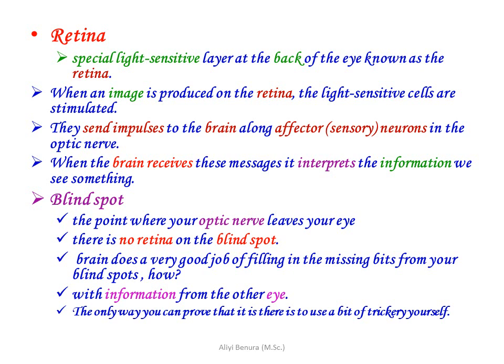The blind spot is the point where your optic nerve leaves your eye. There is no retina on the blind spot. The brain does a very good job of filling in the missing information from your blind spot using information from the other eye. The only way you can prove it exists is to test it yourself.